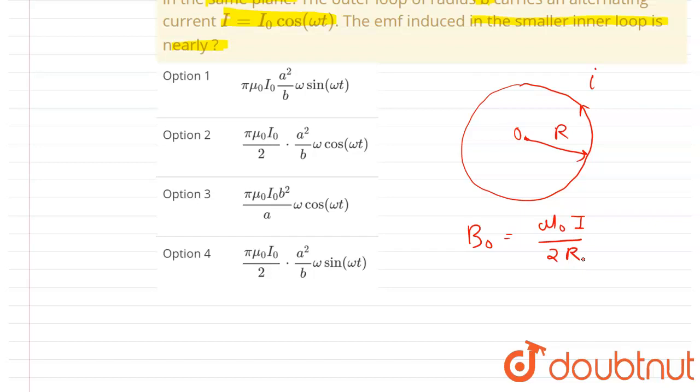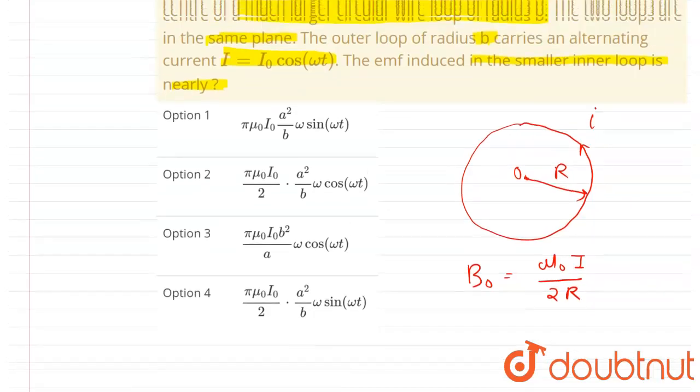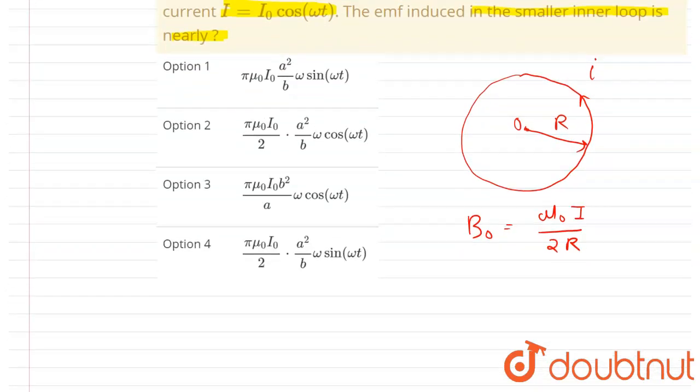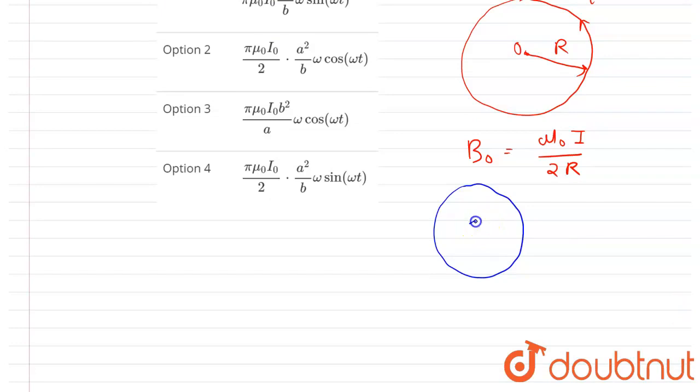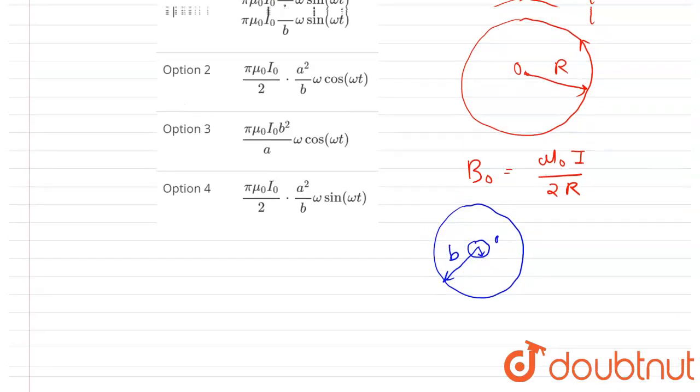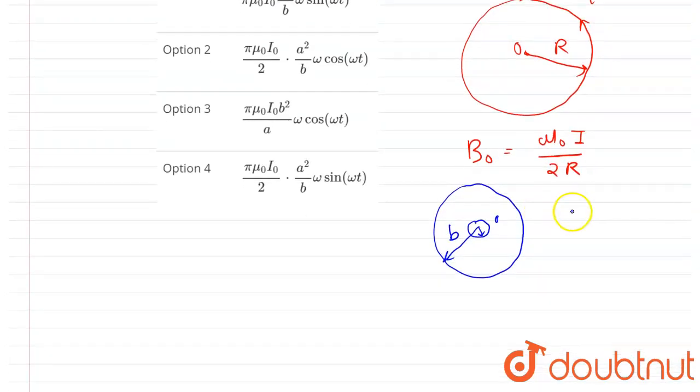So I will write magnetic field at O center is equals to mu naught I by 2R. So it is given here at the center of the bigger loop, whose radius is much, much larger, a smaller loop of radius small a is kept. So let us draw the diagram of the situation. So this is a bigger loop of radius B and at the center of this, a smaller loop of radius A is kept. So already it is given B is much, much greater than A.